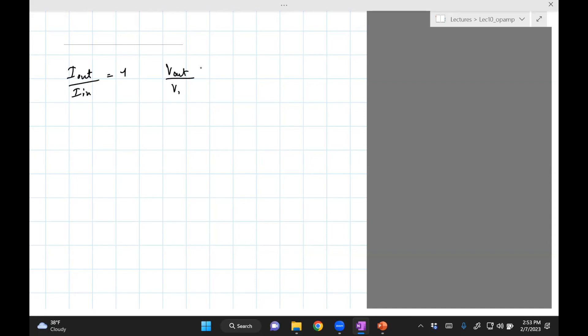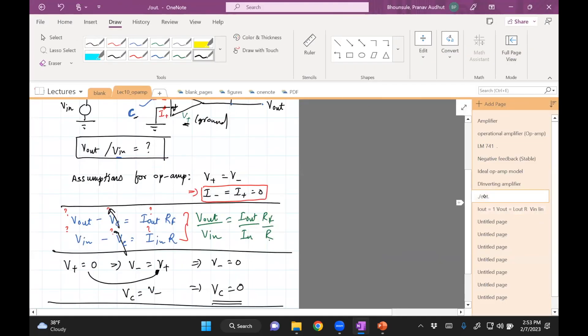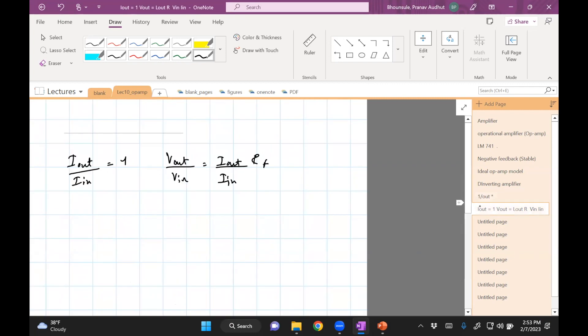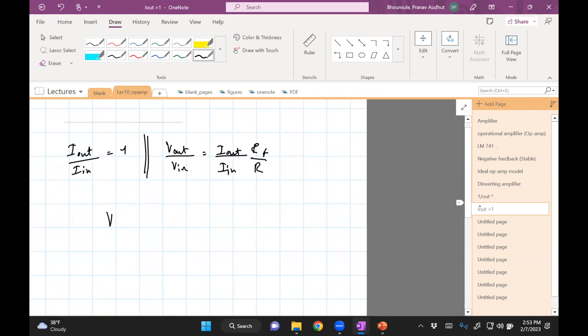So it's negative one. V_out over V_in is RF divided by R. From these equations, we have V_out divided by V_in is nothing but negative RF divided by R.